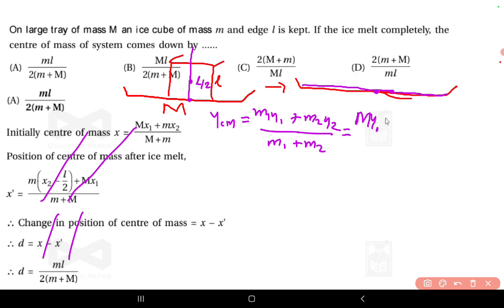Plus mass of that ice is small m, and center of mass is at l by 2. Because for a symmetric body, the center of mass lies at its geometric center, which is here, l by 2 in the y-axis. Because this is my origin, with respect to this the center of mass will lie at l by 2.